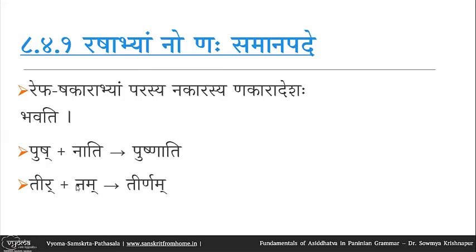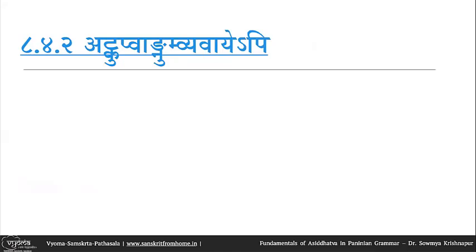More common examples of natva are actually where the nimitta and nakara are not immediately next to each other — there is a vyavadhana or separation between the shakara or repha and the nakara. The next sutra of the Ashtadhyayi, atkupvagnum vyavayapi, provides for natva even when there is a separation of specific letters between the nimitta (repha or shakara) and the nakara.